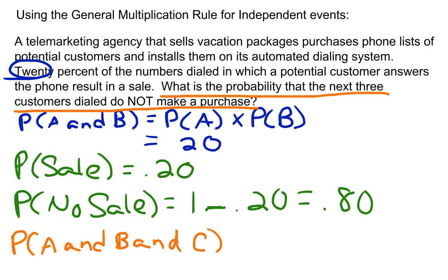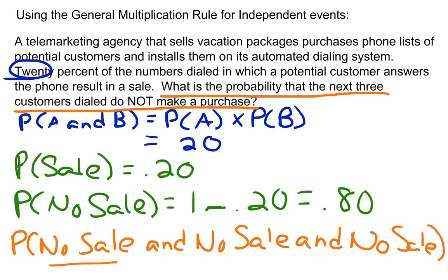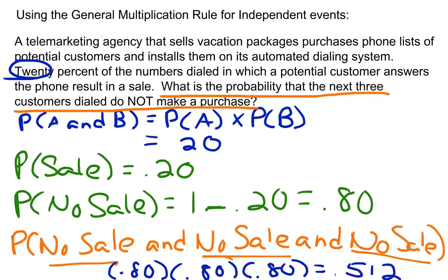So we can think of the probability of A and B and C as being the probability of no sale and no sale and no sale. And statements generally tell us that we need to apply multiplication. So in this case, we would say 0.80 times 0.80 times 0.80. This gives us 0.512, which we could rewrite as 51.2%.